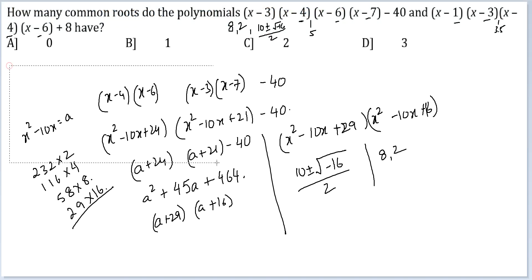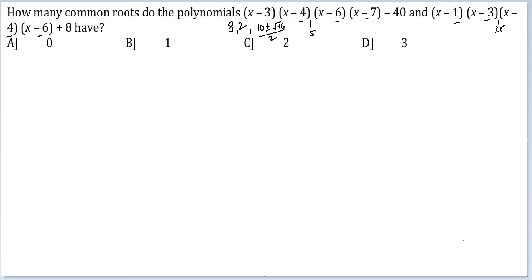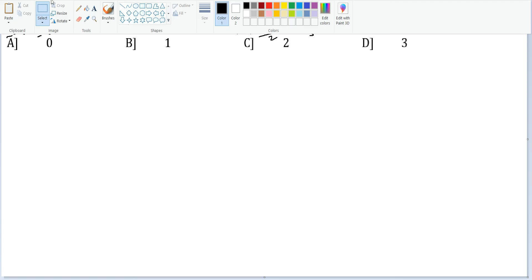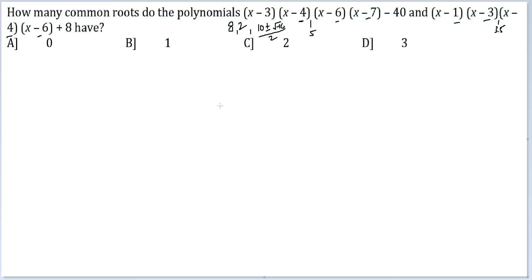We would have to engage in the same processing for the second case as well. This looks very painful. Let's see. (x - 1)(x - 6)(x - 3)(x - 4) + 8. I open this up. I get x square minus 7x plus 6, x square minus 7x plus 12 plus 8. So this time I will take x square minus 7x equal to b.